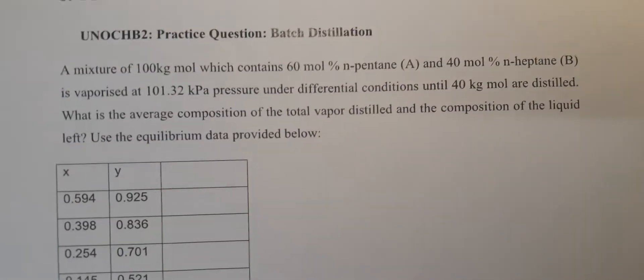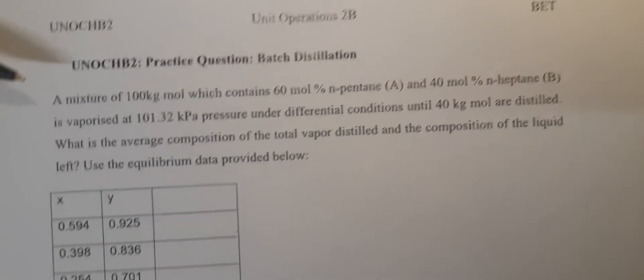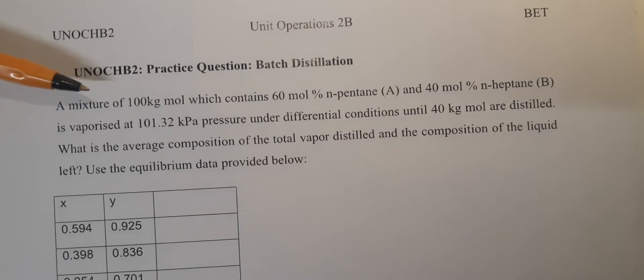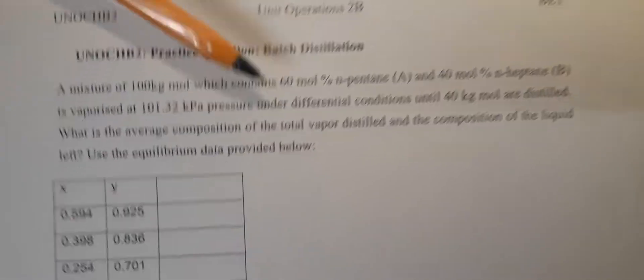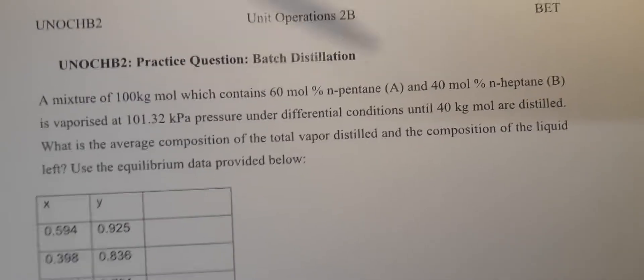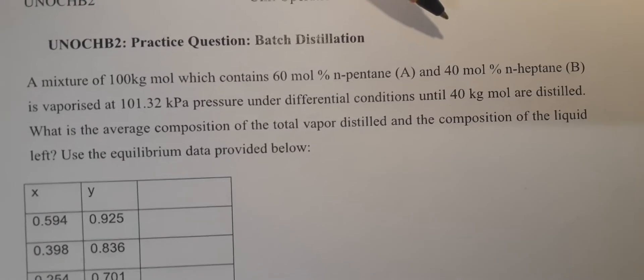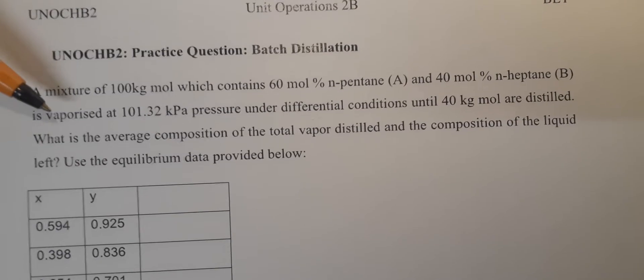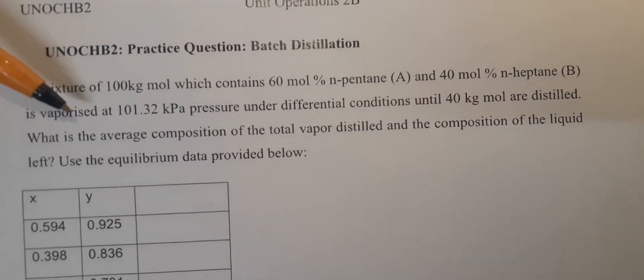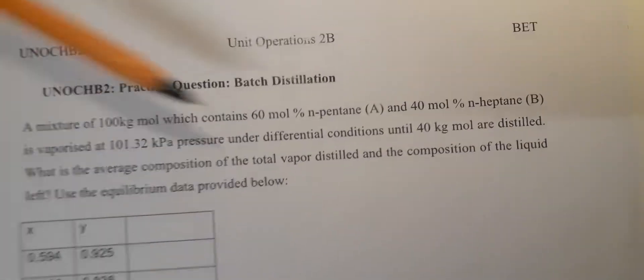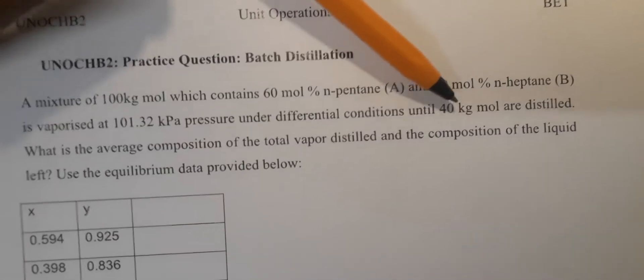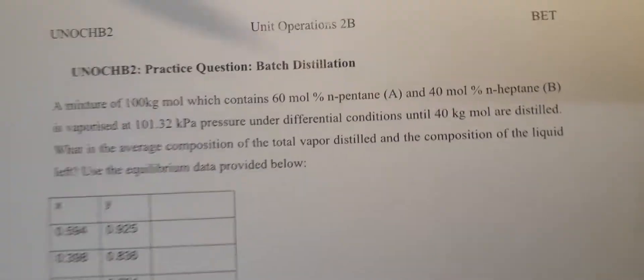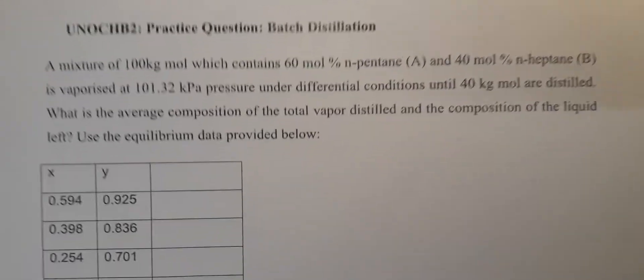So the problem statement is saying that we have a mixture of 100 kilomoles which contains 60 mol% n-pentane and 40 mol% n-heptane, and then this mixture is vaporized at this pressure under differential conditions until we have collected 40 kilomoles of the initial feed.